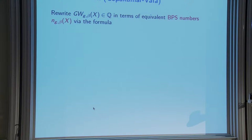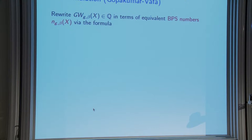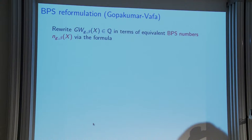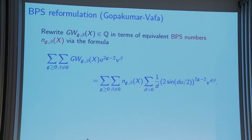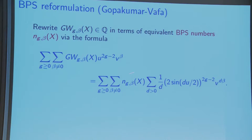This is conjectural due to Gopakumar-Vafa, but for the purposes of this talk it's just numerology. You rewrite the rational Gromov-Witten numbers in terms of equivalent BPS numbers by a formula, and this is equivalent data. Given GW invariants you get BPS numbers and vice versa. To first order when d=1 you get back the GW invariant, so there's an infinite upper-triangular matrix with ones on the diagonal relating them — completely invertible. Conjecturally these BPS numbers are integers, which means all the denominators in GW invariants come from this formula.